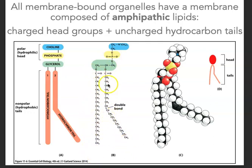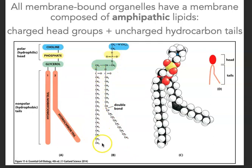The hydrocarbons are literally just made up of carbons and hydrogens. We see that there are long chains of them and they could be of various lengths. Sometimes they can have only single bonds between the carbons, and in other molecules there are double bonds between some of the carbons.